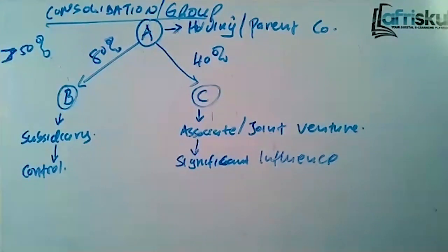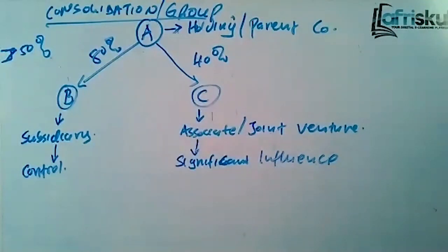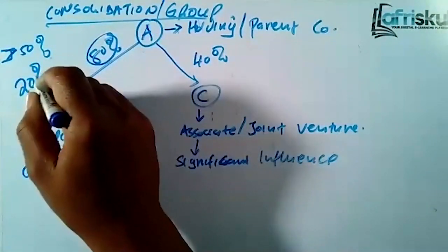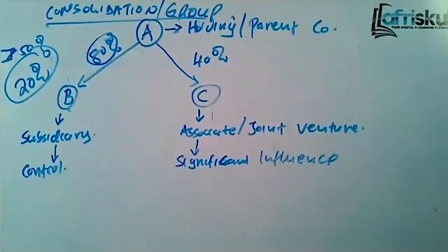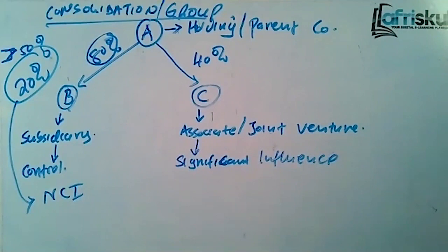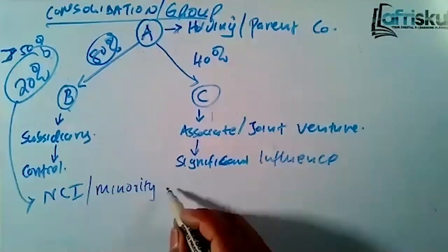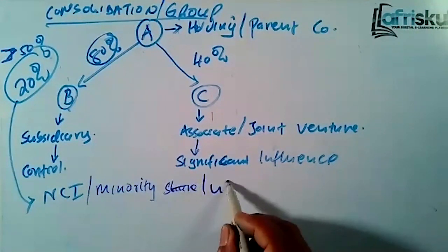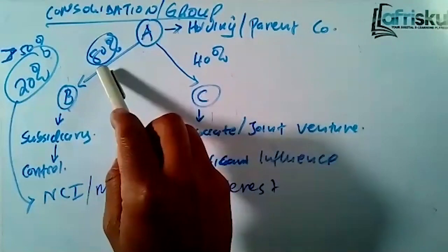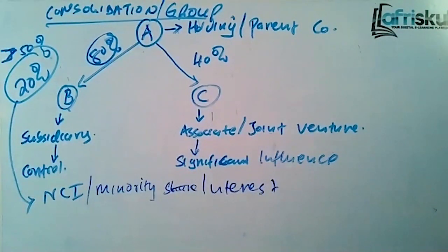That's the difference between a subsidiary and an associate. Now, another thing you need to know: when Company A acquires Company B at 80 percent, there is another proportion of 20 percent in B which has not been acquired by A. This 20 percent is what we call NCI, or the non-controlling interest. Non-controlling interest is also known as minority shareholders or minority interest.